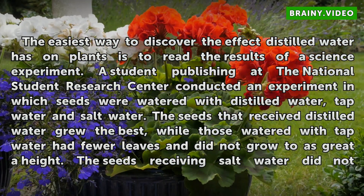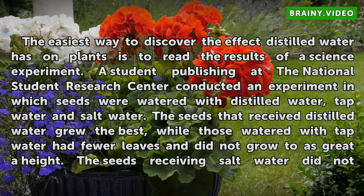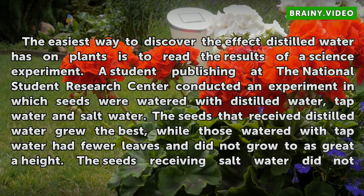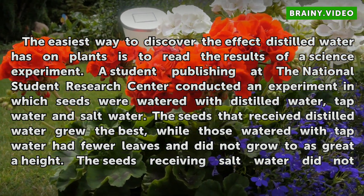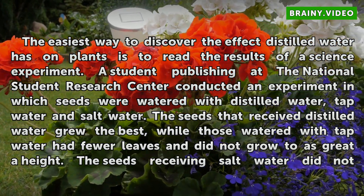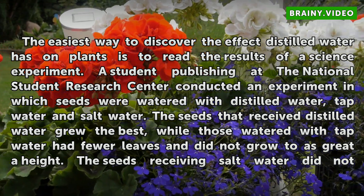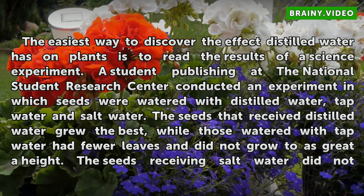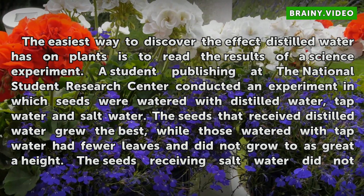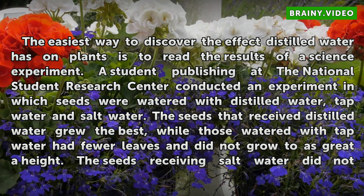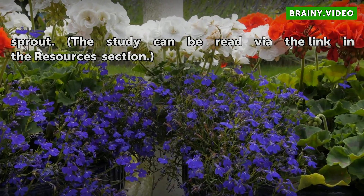The easiest way to discover the effect distilled water has on plants is to read the results of a science experiment. A student publishing at the National Student Research Center conducted an experiment in which seeds were watered with distilled water, tap water, and salt water. The seeds that received distilled water grew the best, while those watered with tap water had fewer leaves and did not grow to as great a height. The seeds receiving salt water did not sprout.